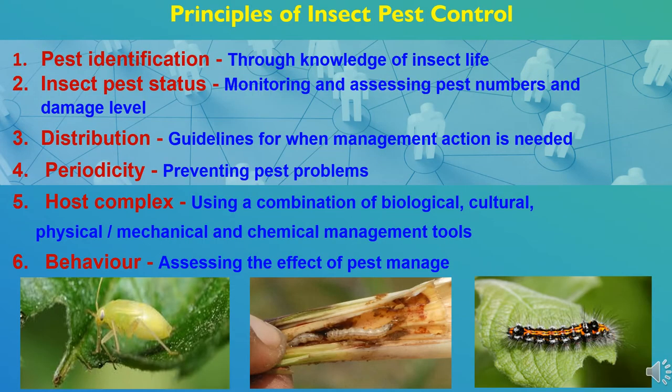Principles of insect pest control. The economic losses caused to crops due to pest attack may vary from zero to cent percent. Therefore, sometimes it becomes essential to check them. Insect control methods includes everything which checks the population of insects or compels them to lead laborious life, to spread or kill them.